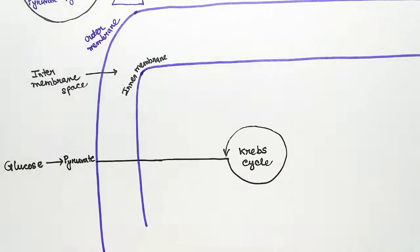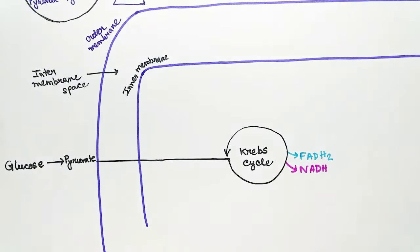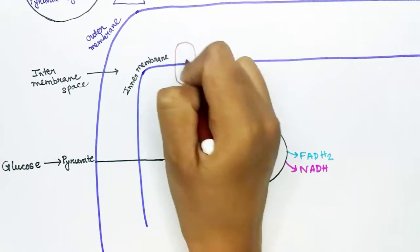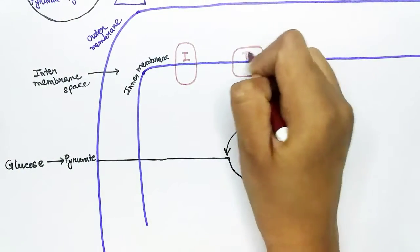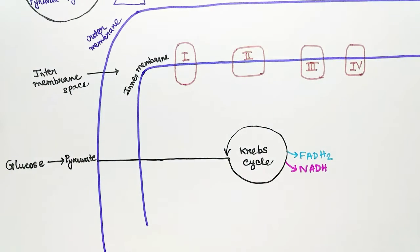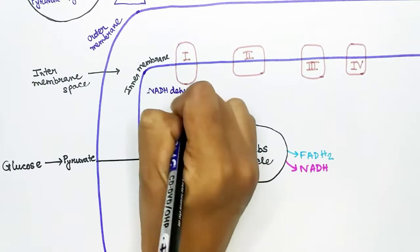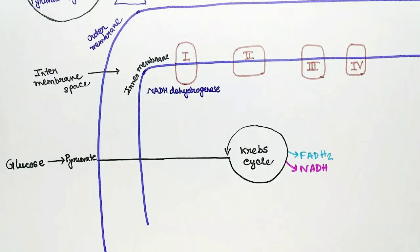Inside mitochondria, pyruvate goes through the Krebs cycle, which produces energy molecules like NADH and FADH2. These molecules go through the electron transport chain to produce ATP. The electron transport chain is a chain of enzymes present in the inner membrane of mitochondria. The first enzyme is NADH dehydrogenase complex, also called Complex 1.